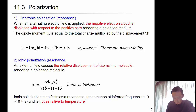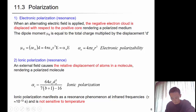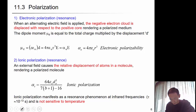In ionic polarization, an external field causes the relative displacement of atoms in a molecule, rendering a polarized molecule. Ionic polarization manifests as a resonance phenomenon at infrared frequencies and is not sensitive to temperature.